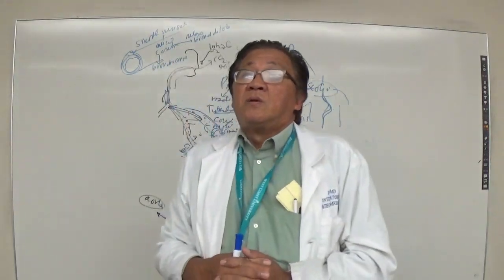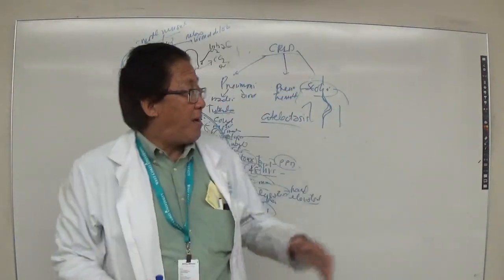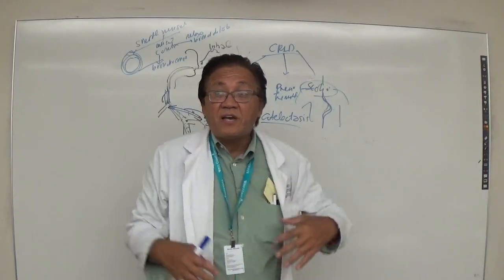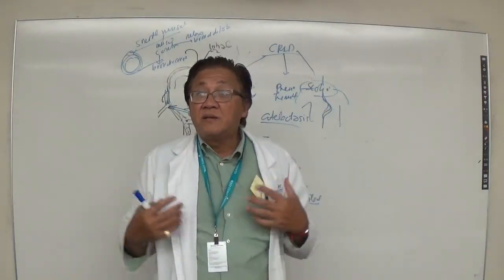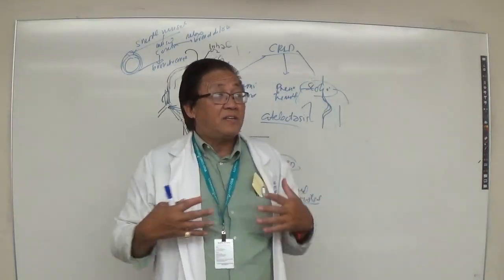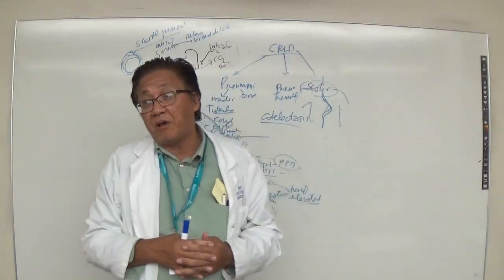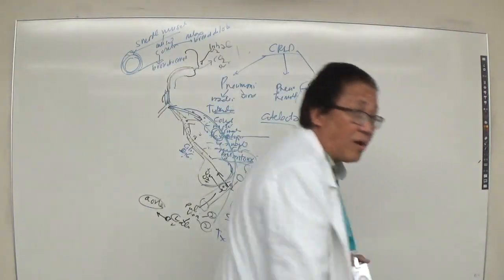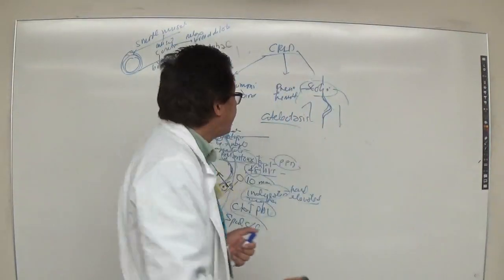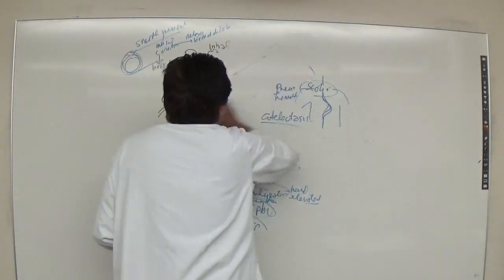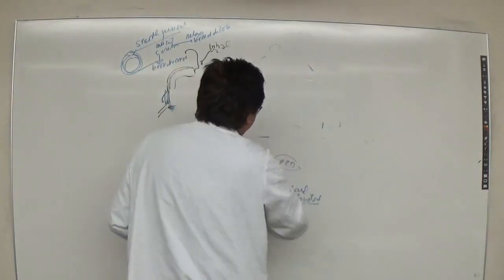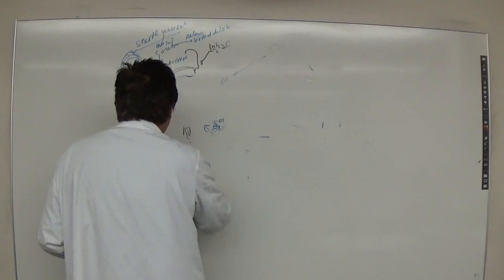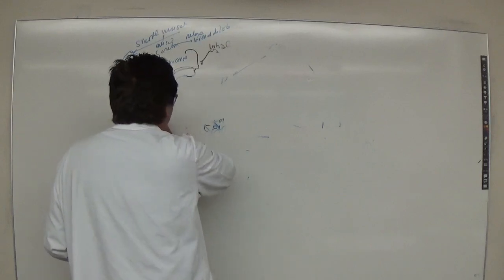Other problems such as muscular dystrophy and muscular weakness can also affect lung expansion. That is clear. Now let's move on to ABG — arterial blood gas — and acid-base disorders.